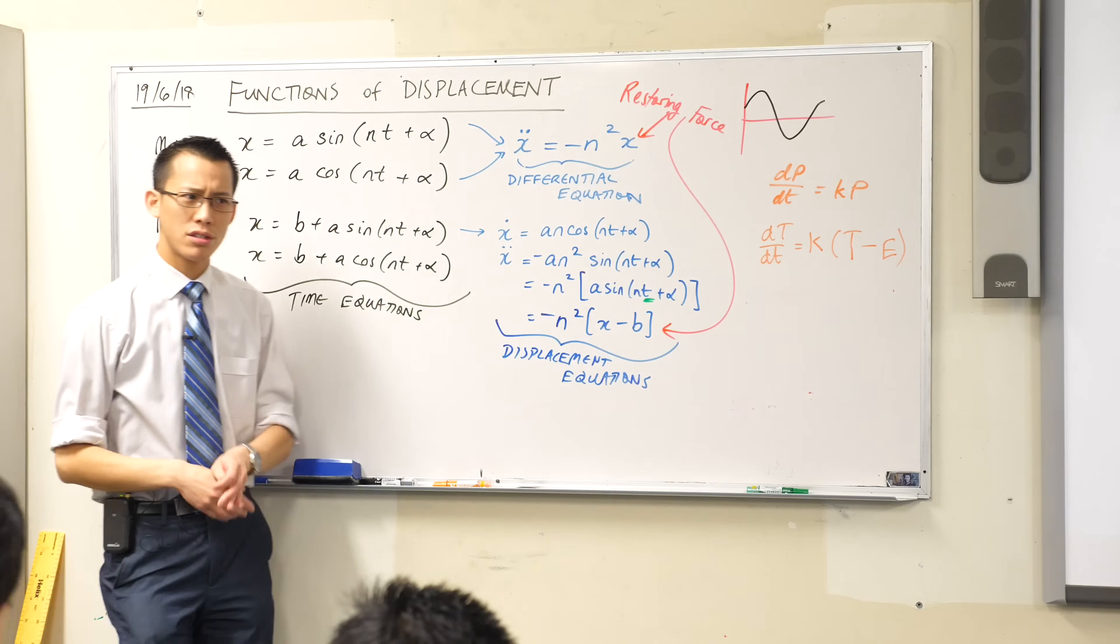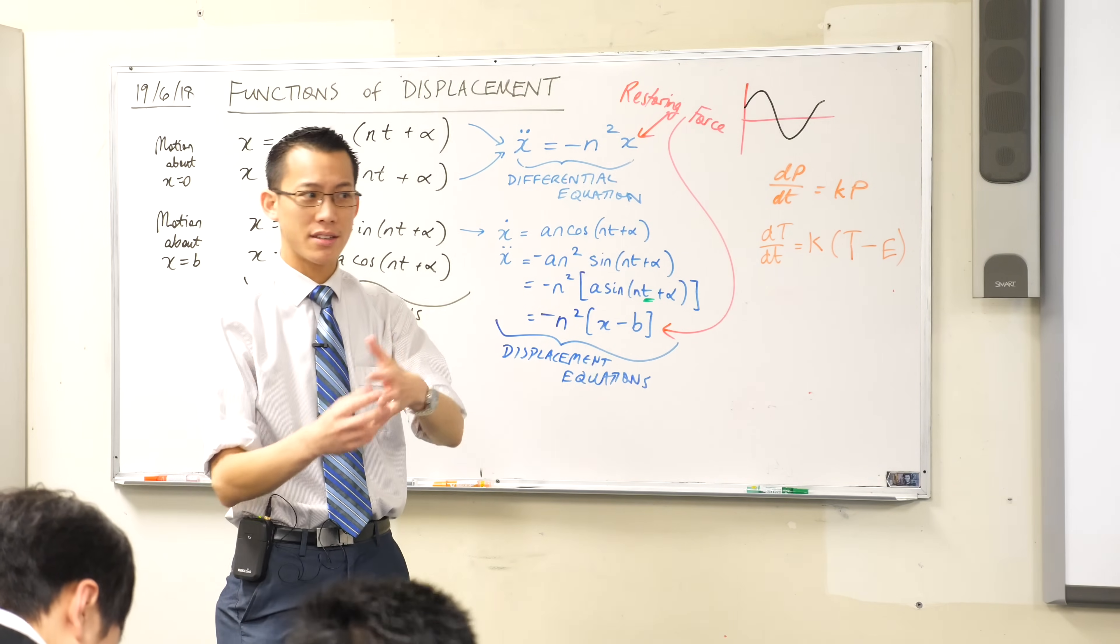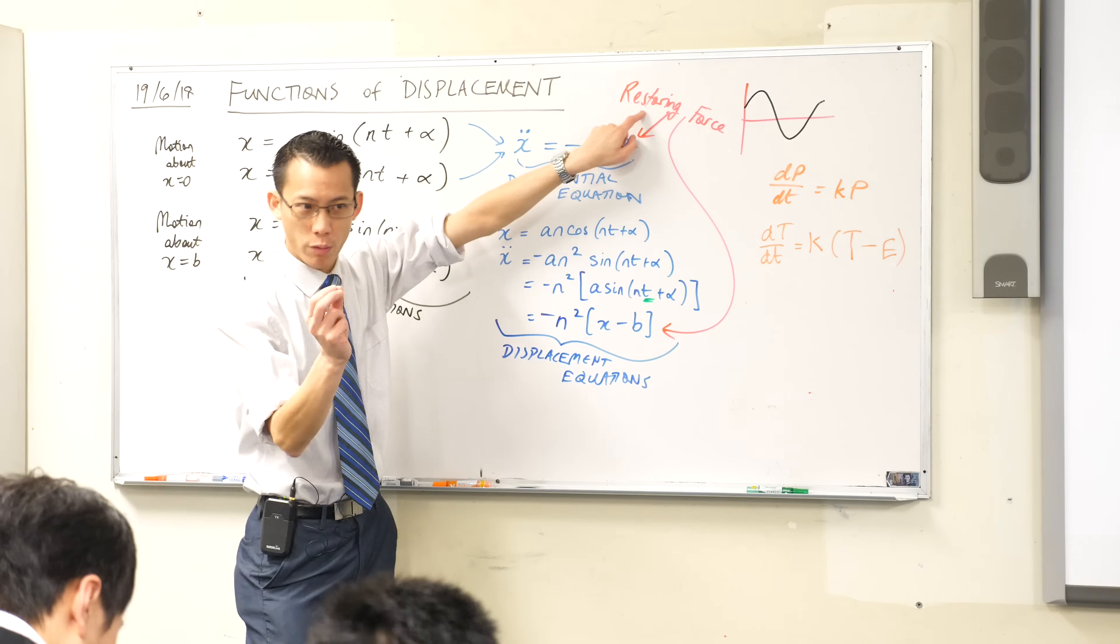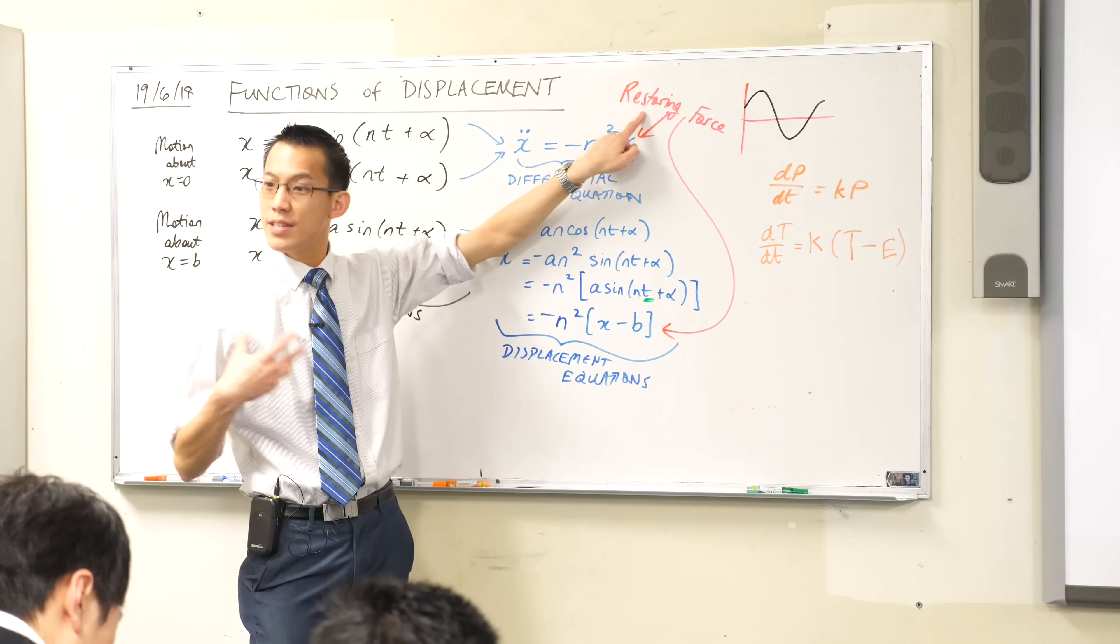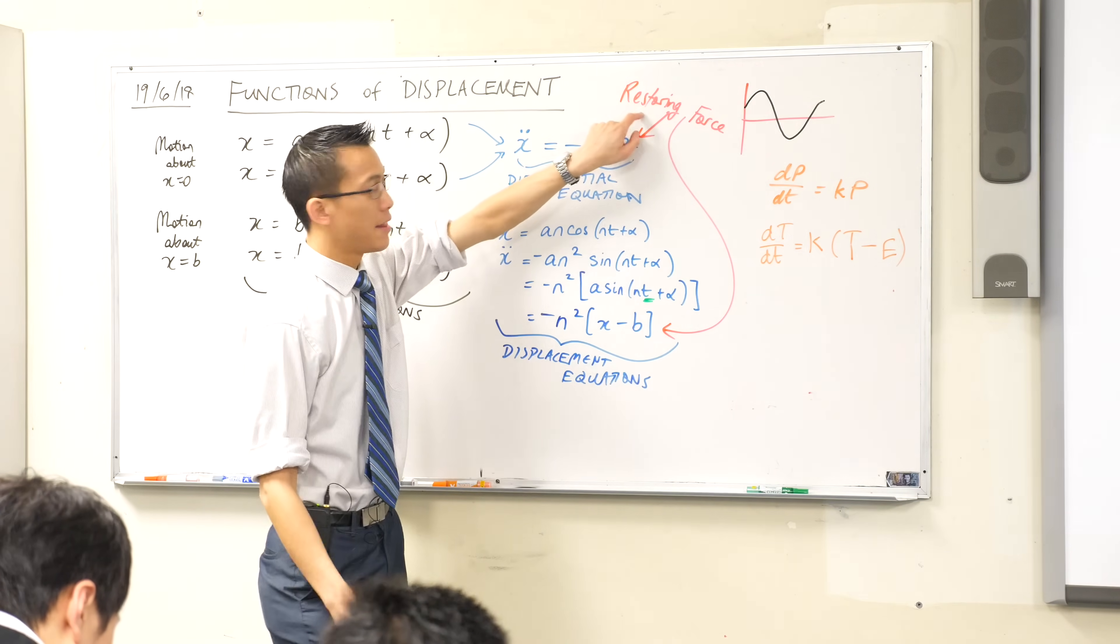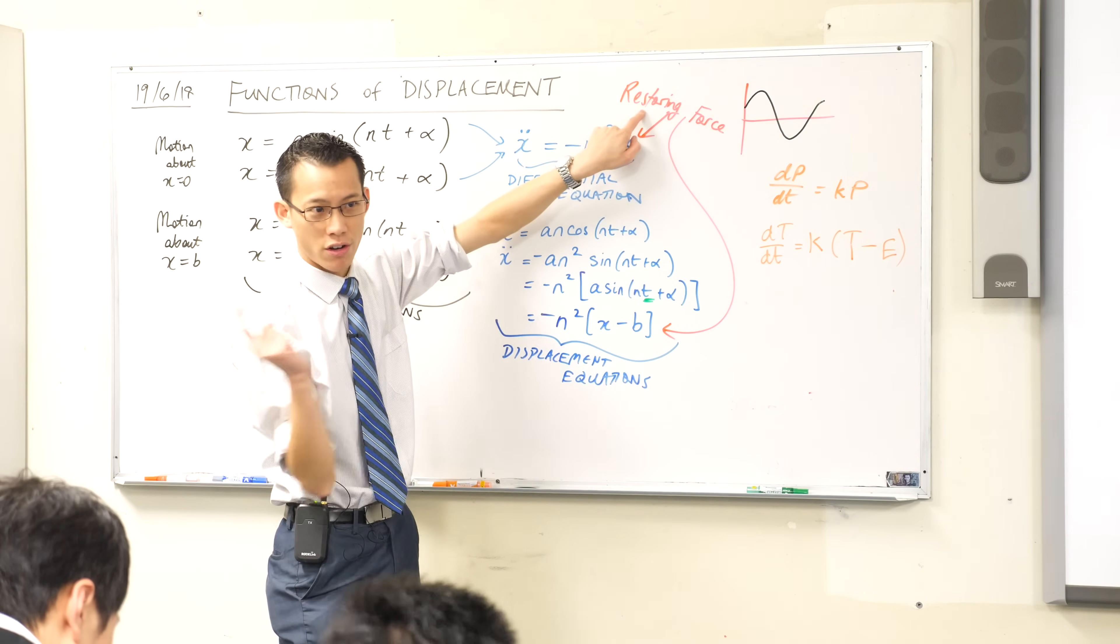The extension two students, they actually have to look at stuff like air resistance or motion through a medium. That's the opposite of a restoring force. That's what we call a resisting force. It's like stopping you from going in whatever direction you're trying to go. This is making the motion go on and on and on and on.